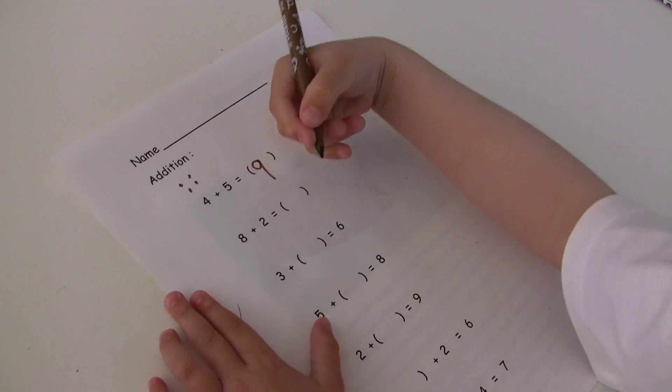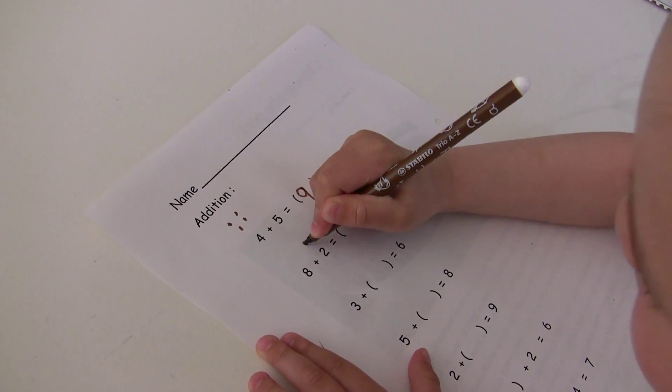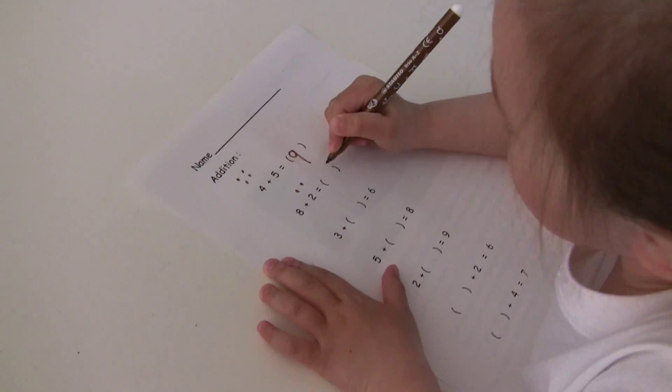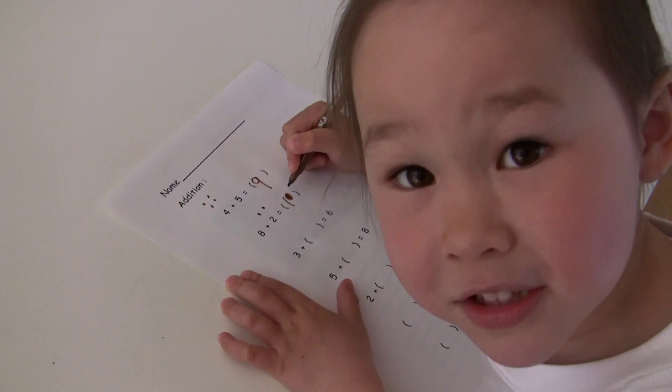Yeah, I won. 8 plus 2, I got that 2. 1, 2, 8, 9, 10. I know it. So no need to dot. No need to dot.